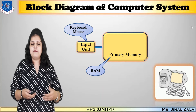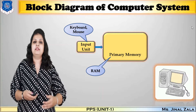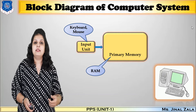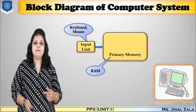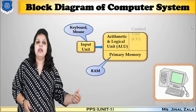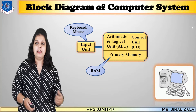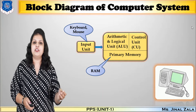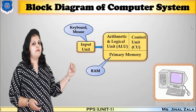You create a file that is in primary memory. Then processing happens on this file, and this processing is done by our CPU — central processing unit. It is the brain of the computer. CPU is divided into two parts: the first is the arithmetic and logic unit (ALU), and the second is the control unit. ALU is used for arithmetic and logic operations like addition, subtraction, multiplication, and division.